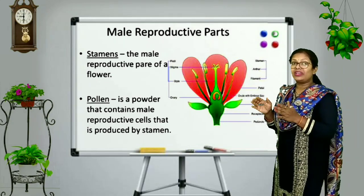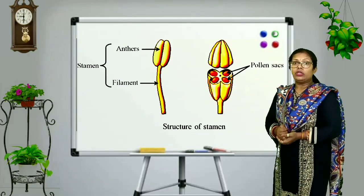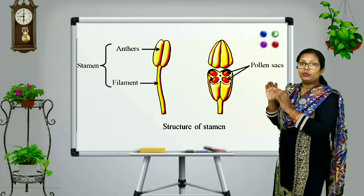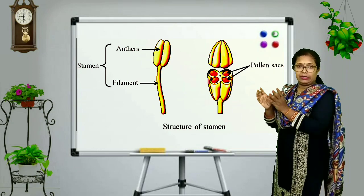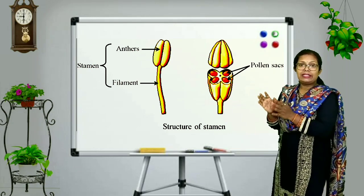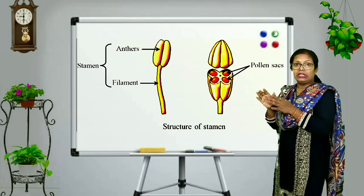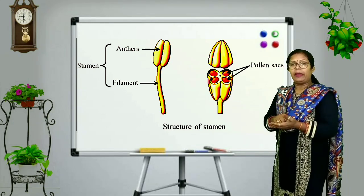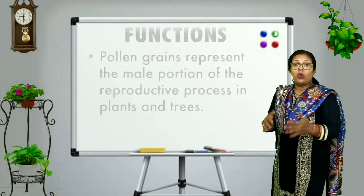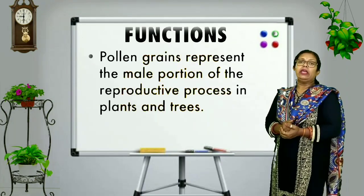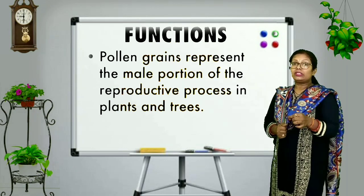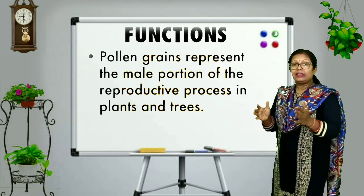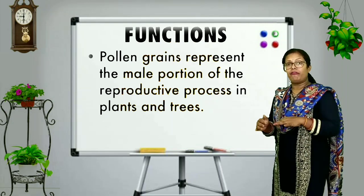Now we will talk about the structure of a stamen. There is a thin filamentous structure called the filament, and on top of the filament there is a broad, wide structure known as the anther. Inside the anther, pollen grains are formed. The nucleus inside the pollen grains is the male nucleus or male gamete, so we can say that the anther is the structure where male gametes are formed.